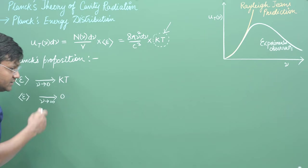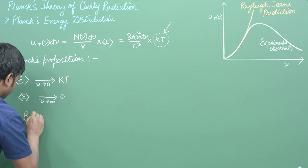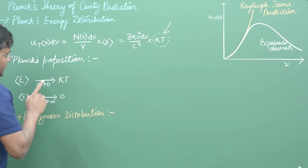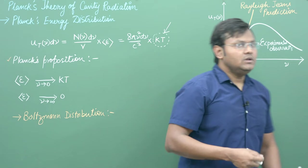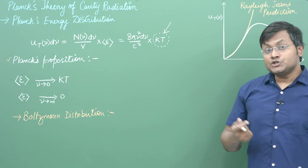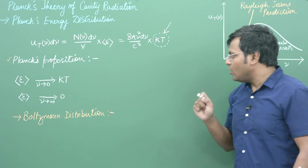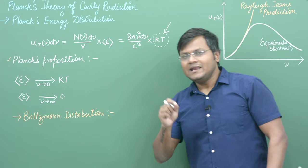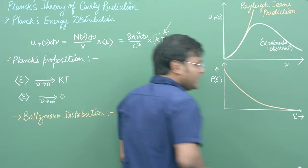To understand how Planck achieved these conditions, we must first look at the Boltzmann distribution. The Boltzmann distribution is a probability distribution that gives us the probability of finding a system in a given state as a function of the state's energy and temperature. It is from the Boltzmann distribution that we calculate the average energy associated with a standing wave.